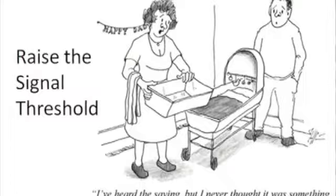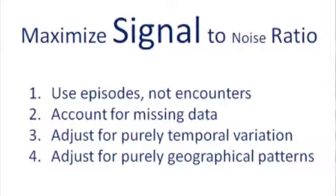One way to deal with all this noise in the surveillance system is to increase the threshold — that's a common approach, but it's not a good way because you throw out the baby with the bathwater. The key thing, in terms of statistics, is to maximize the signal-to-noise ratio. You want to use episodes of disease rather than individual encounters, account for missing data, and adjust for purely temporal or purely spatial variation in disease.